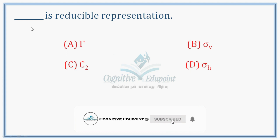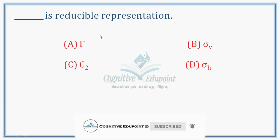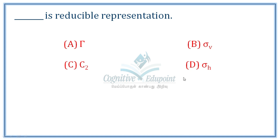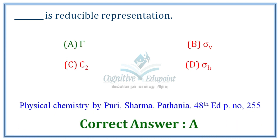Next question: What is a reducible representation? In group theory, sigma-h is a horizontal plane of symmetry, C with n=2 is a rotation symmetry operation, and the vertical plane of symmetry is another symmetry symbol. The letter A is the Bethe notation for a representation — used for reducible and irreducible representations. Correct answer: A.